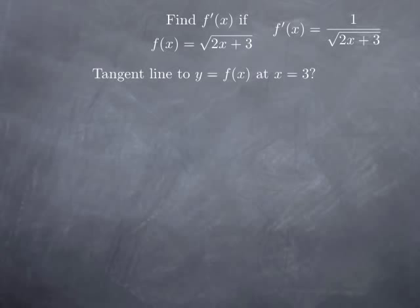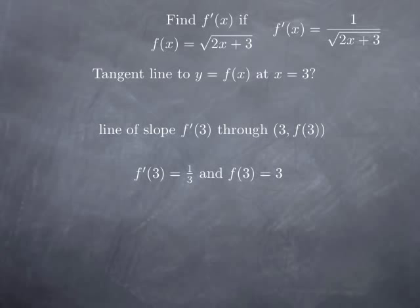If we are asked to find the tangent line to the graph of that function at x equals 3, the tangent line is the line of slope f prime of 3 through the point with coordinates (3, f of 3). Plugging x equals 3: f prime of 3 is 1 third, and f of 3 is 3. So we have the line of slope 1 third through the point (3, 3), and the tangent line has equation y minus 3 equals one third times x minus 3.